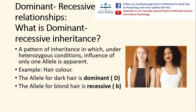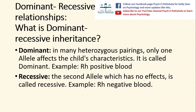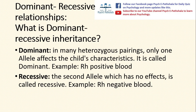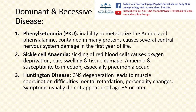The child will have dark hair color and not blonde hair color. Dominant alleles are the only alleles that affect the child's characteristics in heterozygous pairings. For example, Rh positive blood factor is a dominant allele in humans. The recessive allele is the one which has no effect in heterozygous pairings; for example, Rh negative blood factor is a recessive allele in humans. Let us now discuss a few dominant and recessive diseases.